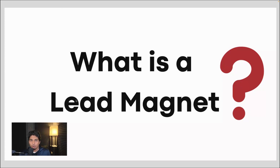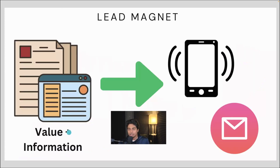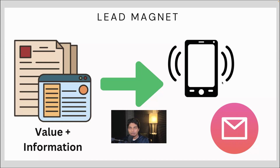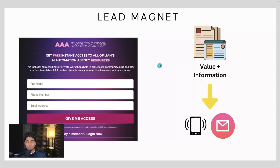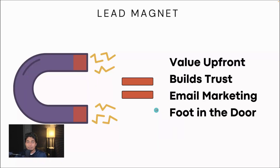A lot of you should be familiar with what a lead magnet is, but in case you're not, it's very simple. Essentially, you give up some value and information as a creator or someone trying to sell their services. In exchange, from your audience, you get a cell phone number, an email — a piece of contact information so you could further market them down the line. For my people in the AI space, Liam Motley has a great example of a lead magnet. He will give you a bunch of information behind an information wall — value and ways to scale with AI — but you have to give him a phone number, email, and first name. It's a win-win trade-off.